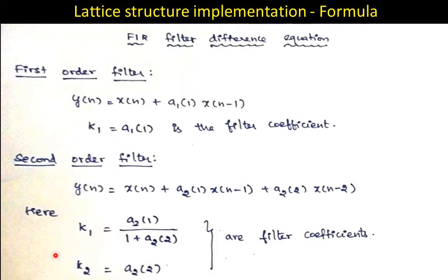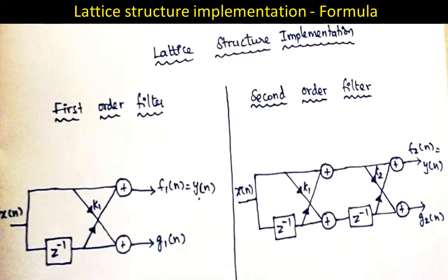Whenever you see a first order or second order FIR filter equation, you make use of the values k1 and k2. To draw the filter structure for a first order filter, you draw two parallel lines with summers at both ends, a delay element in the bottom line, and a crisscross line with two multipliers.